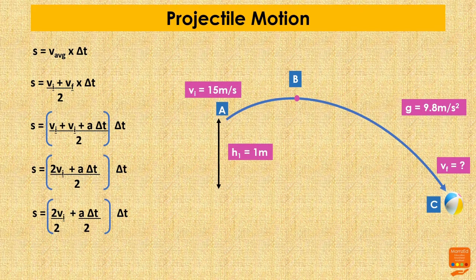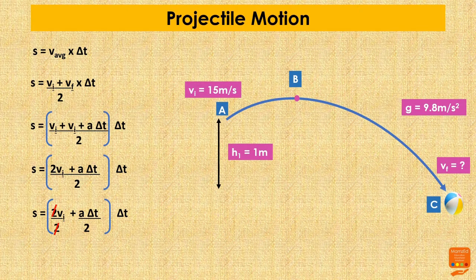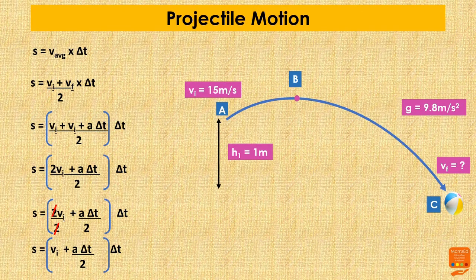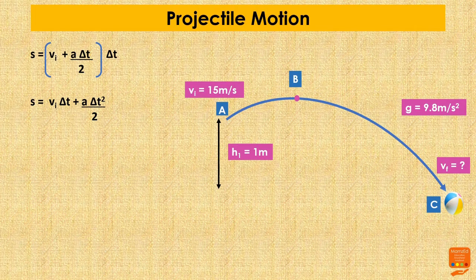Simplifying the equation: S becomes (2Vi/2 + acceleration × Δt/2) × Δt. The 2s cancel out, so S becomes (Vi + acceleration × Δt/2) × Δt. Opening the brackets, S equals Vi multiplied by Δt plus acceleration multiplied by Δt squared divided by 2.